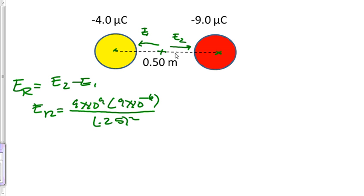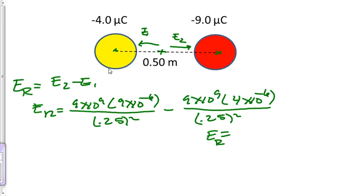The electric field is equal to... And the electric field resultant because of the presence of both charges is equal to 7.2 times 10 to the 5th newtons per coulomb.